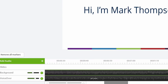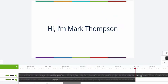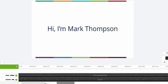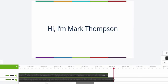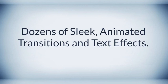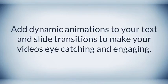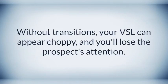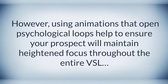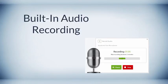In addition, the new timeline snapping, zoom in and zoom out feature, and ability to make instant cuts in your audio and video files drastically reduces your time to create professional videos. Dozens of sleek animated transitions and text effects — add dynamic animations to your text and slide transitions to make your videos eye-catching and engaging. Without transitions, your VSL will appear choppy and you'll lose the prospect's attention. However, using animations, that open psychological loop helps ensure your prospect maintains heightened focus throughout the entire VSL and right to the buy button.